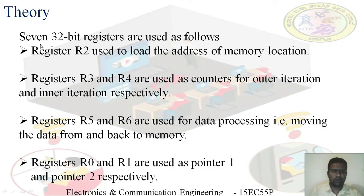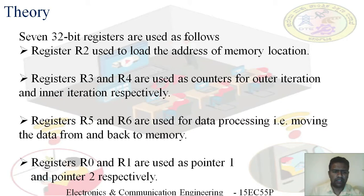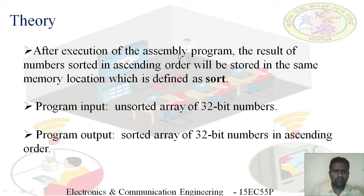In our program, we are going to use seven 32-bit registers. Register R2 is used to load the address of the memory location. Registers R3 and R4 are used as counters for outer and inner iterations. Registers R5 and R6 are used for data processing — moving data from and back to memory. Registers R0 and R1 are used as pointer1 and pointer2 respectively. After execution, sorted numbers will be stored in the memory location defined as 'sort'. The input is an unsorted array of 32-bit numbers; the output is a sorted array in ascending order.